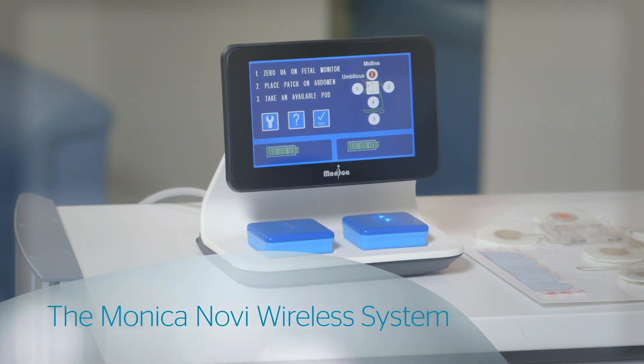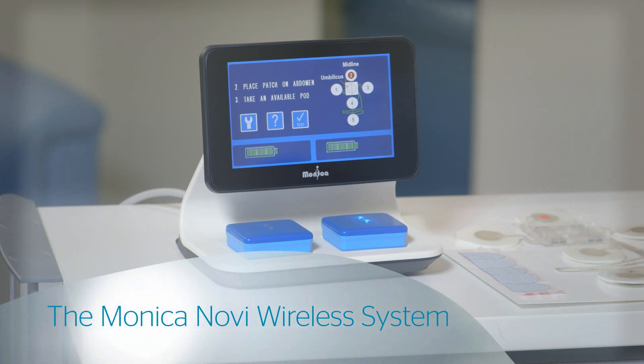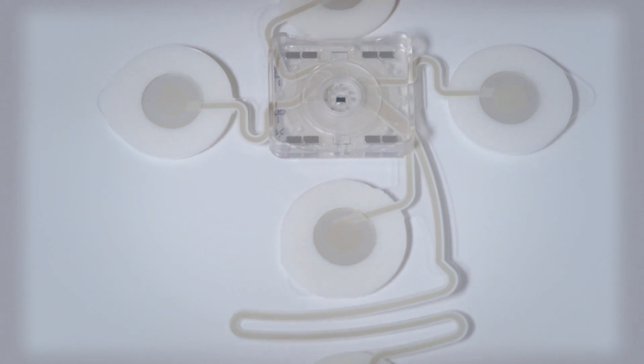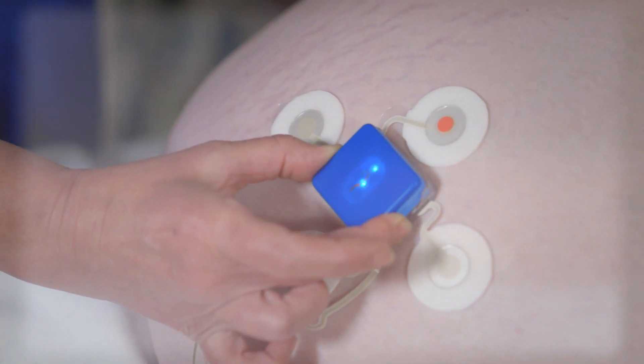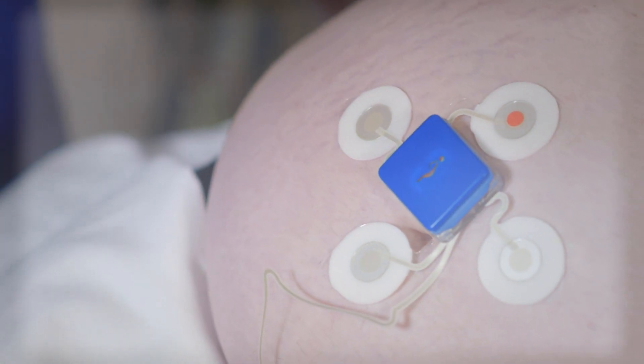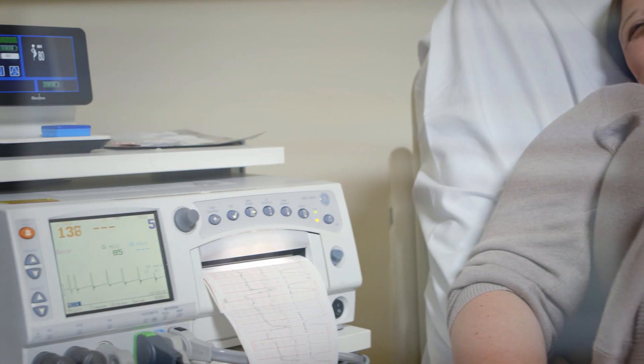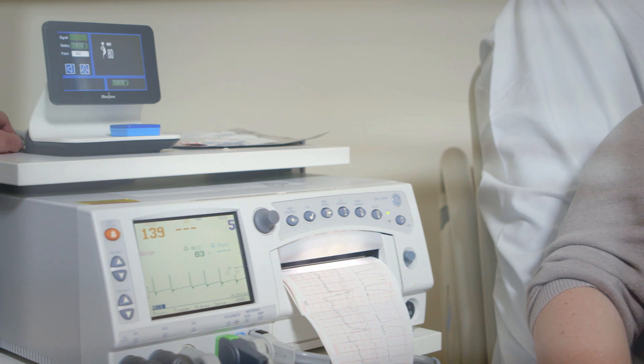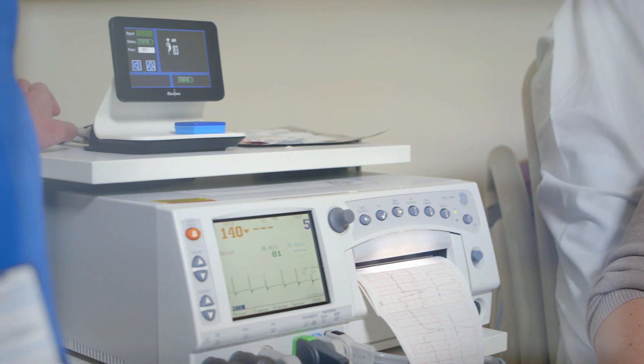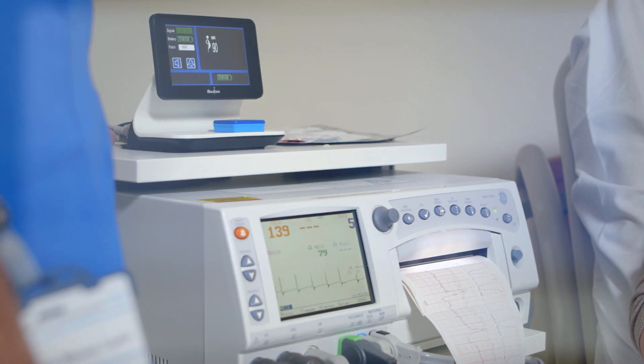Novi consists of three elements: a single-use peel-and-stick electrode patch to detect the electrical signals on the abdomen; a small, reusable pod that magnetically clips to the patch and wirelessly transmits the key monitoring data to the Novi interface; and the Novi interface, that connects directly to your monitor's front panel transducer connectors.